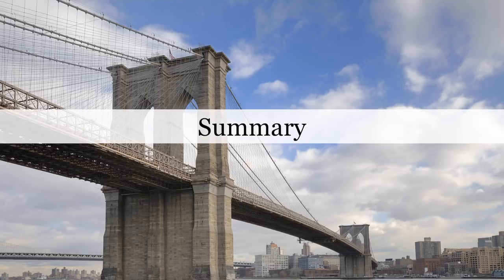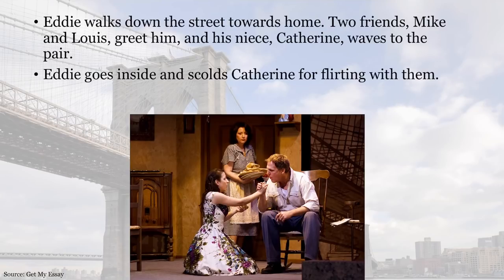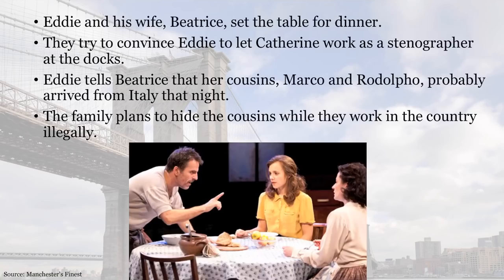The play starts with Alfieri sitting in his office — he's a middle-aged Italian-American lawyer — who introduces us to the story of Eddie Carbone. Eddie walks down the street towards home, where two friends Mike and Louis greet him. His niece Catherine waves to the pair, and Eddie goes inside and scolds Catherine for flirting with them.